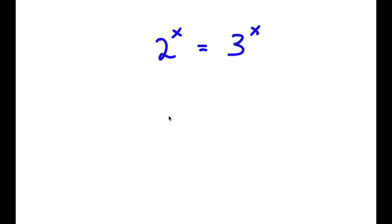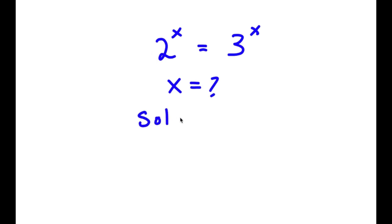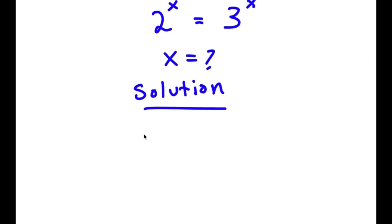In this problem, I have 2 to the power of x is equal to 3 to the power of x. I obviously want to find the value of x here. So for my solution, I'm going to first start by writing 2 to the power of x is equal to 3 to the power of x.